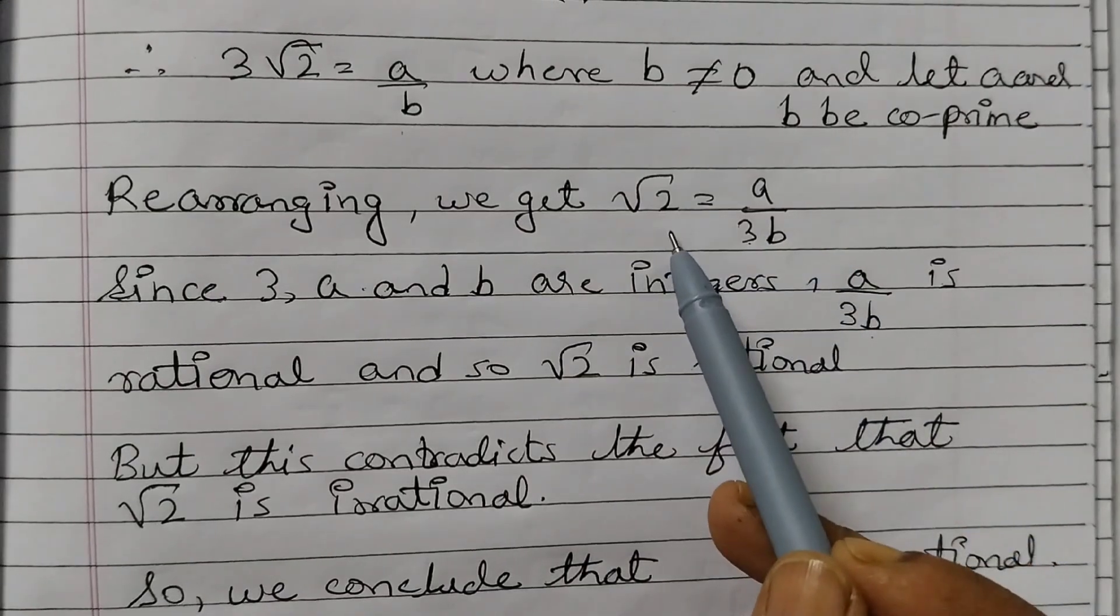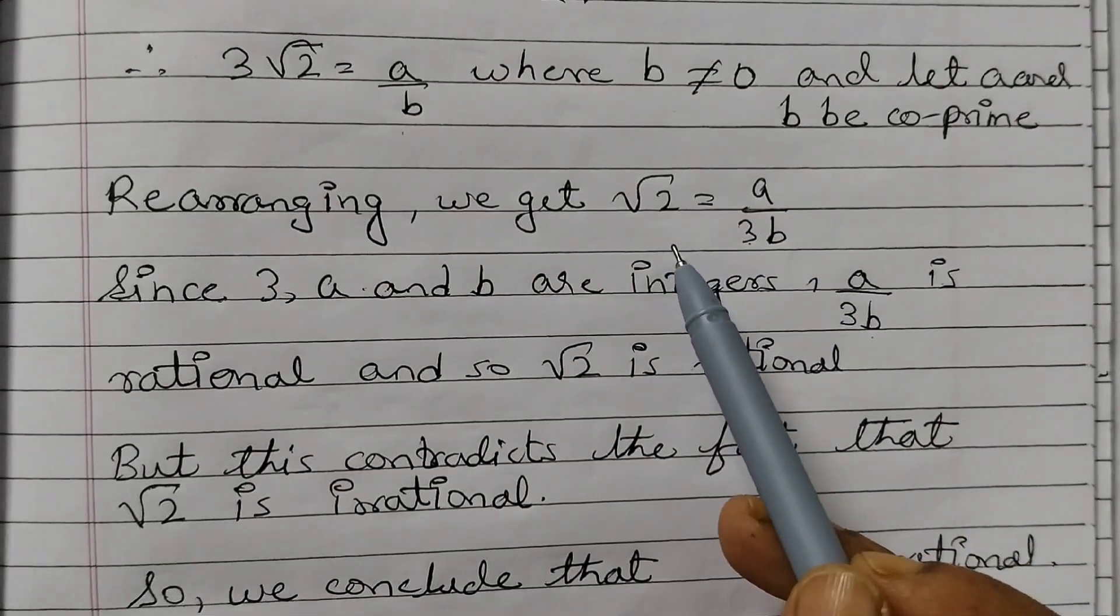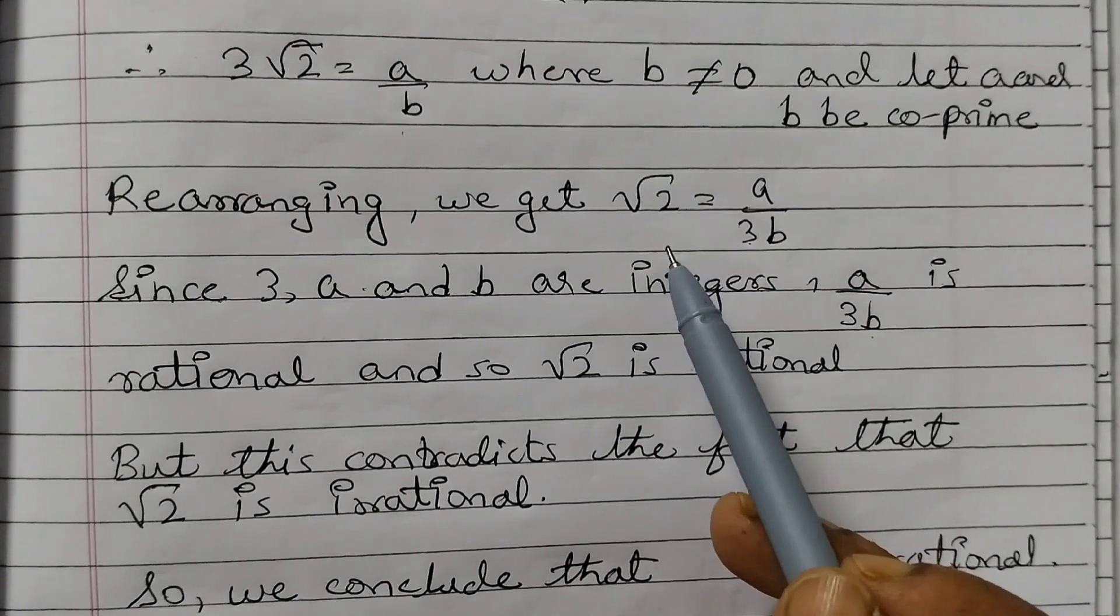If this is rational that means this is also rational, but we know that root 2 is not a rational number. It is an irrational number. We know this or it will be given in your question paper that root 2 is irrational.